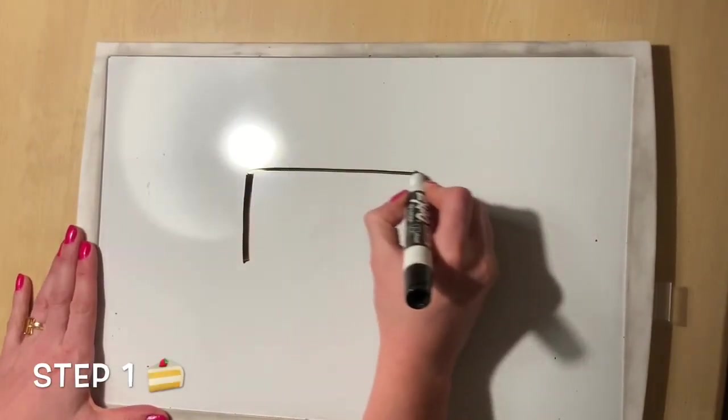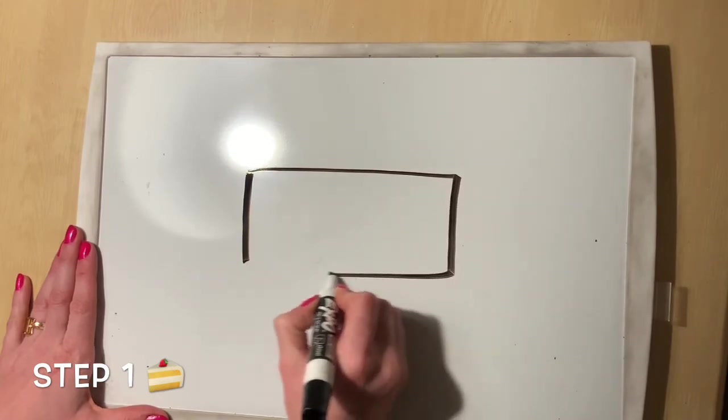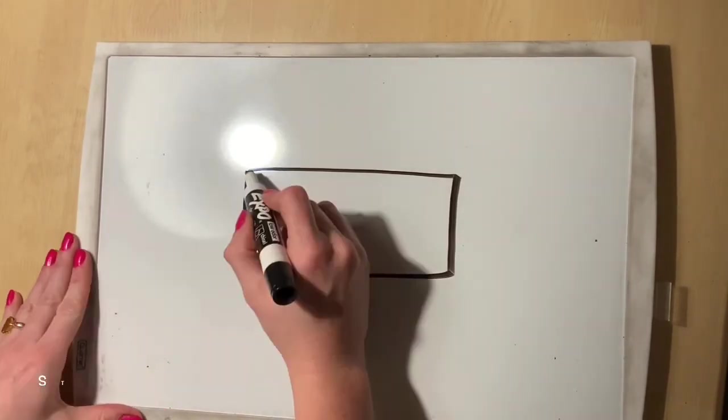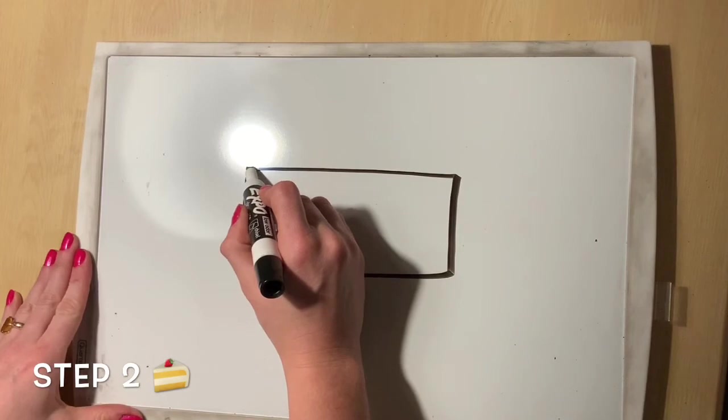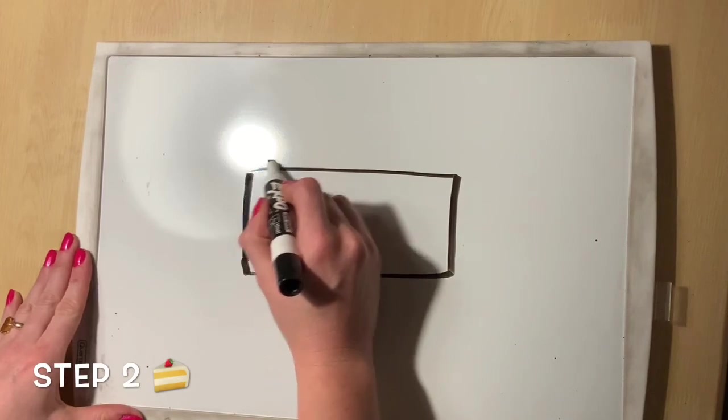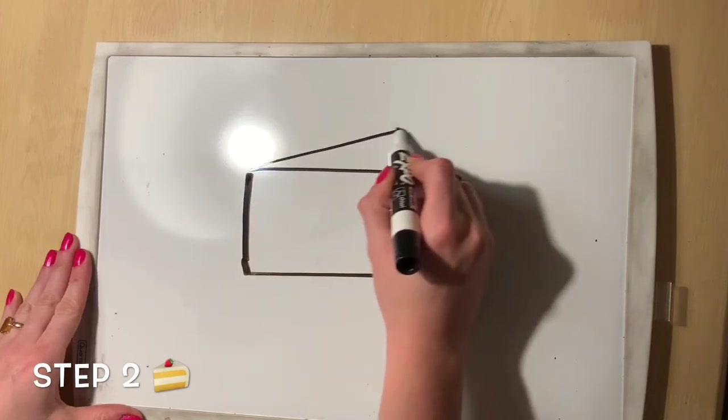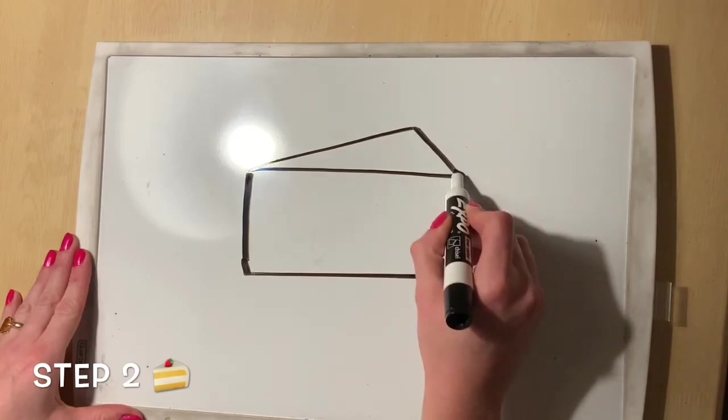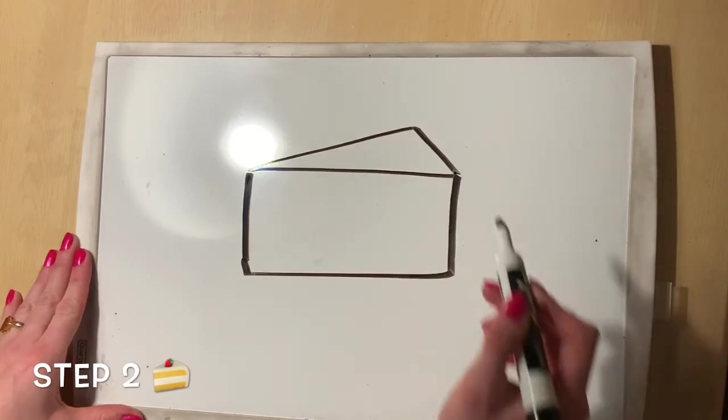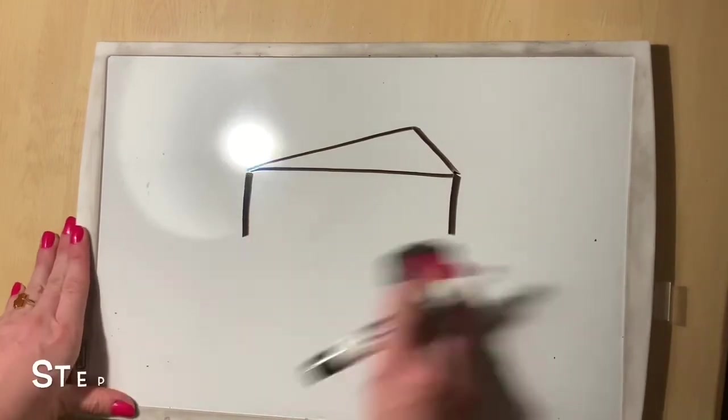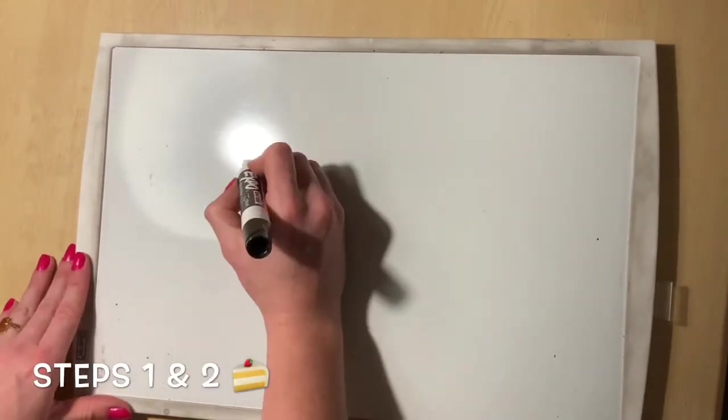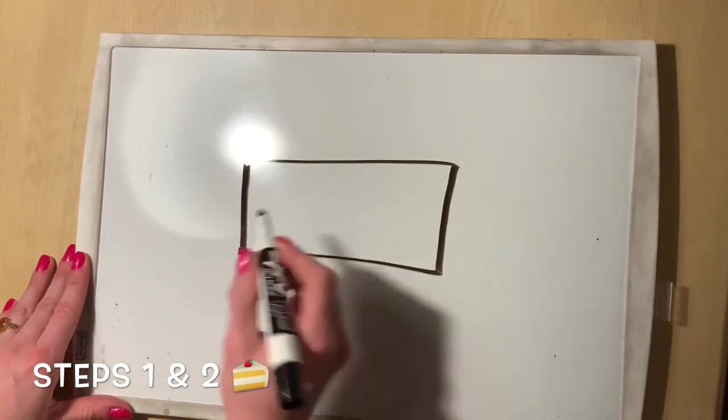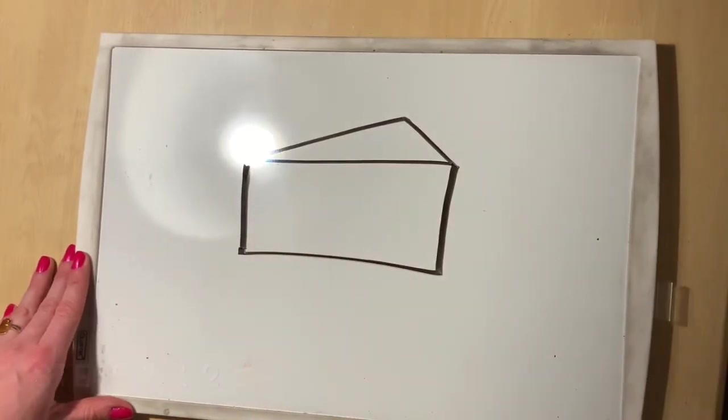So to draw a slice of very realistic 3D looking pie or cake, draw a rectangle and then on top, draw a line going out at an angle and then another line that connects back to the rectangle. Let's watch steps one and two again. Rectangle, two lines on top.